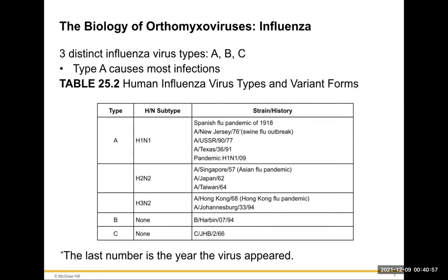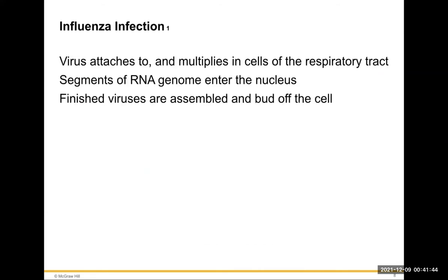There are three distinct influenza virus types: A, B, and C. Type A causes most infections. Type A includes H1N1 — the Spanish flu pandemic of 1918 — the 1976 New Jersey swine flu, the Russian and Texas strains, and the H1N1 pandemic of 2009. It's also responsible for H2N2 and H3N2, the Hong Kong flu pandemic. Influenza B has no subtype; influenza C causes only mild illness. Those are our recent history major strains — Type A is the one that causes all the serious pandemics.